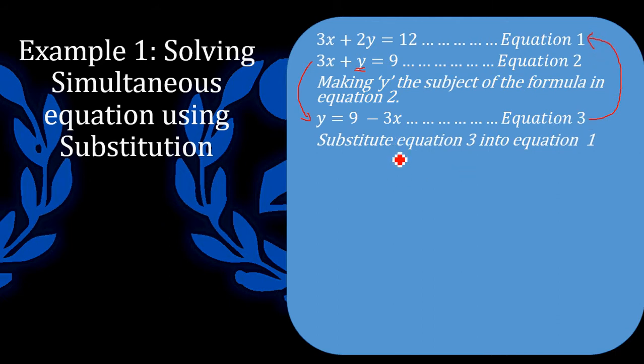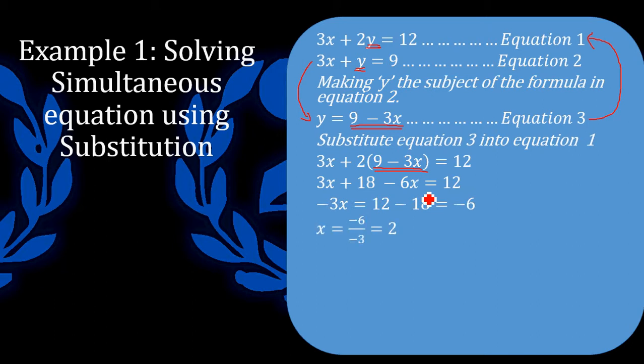When we substitute equation number 3 into equation number 1, what we will end up with is something looking like this. What we did is we replaced the y value which has an equivalence of 9 minus 3x inside of this equation here wherever we saw y. And then from there, we expand and simplify and we will get a value of x being equal to 2.